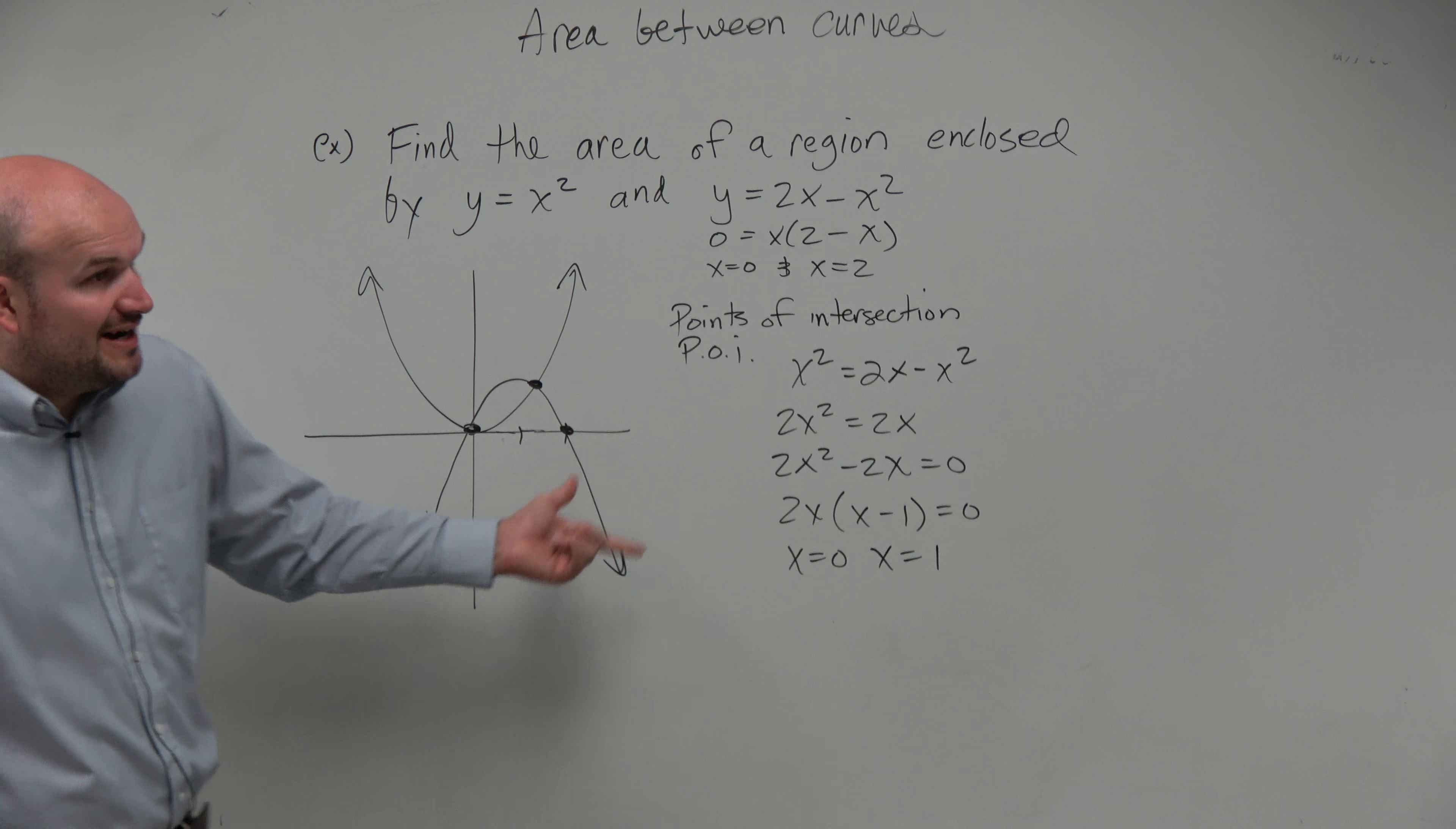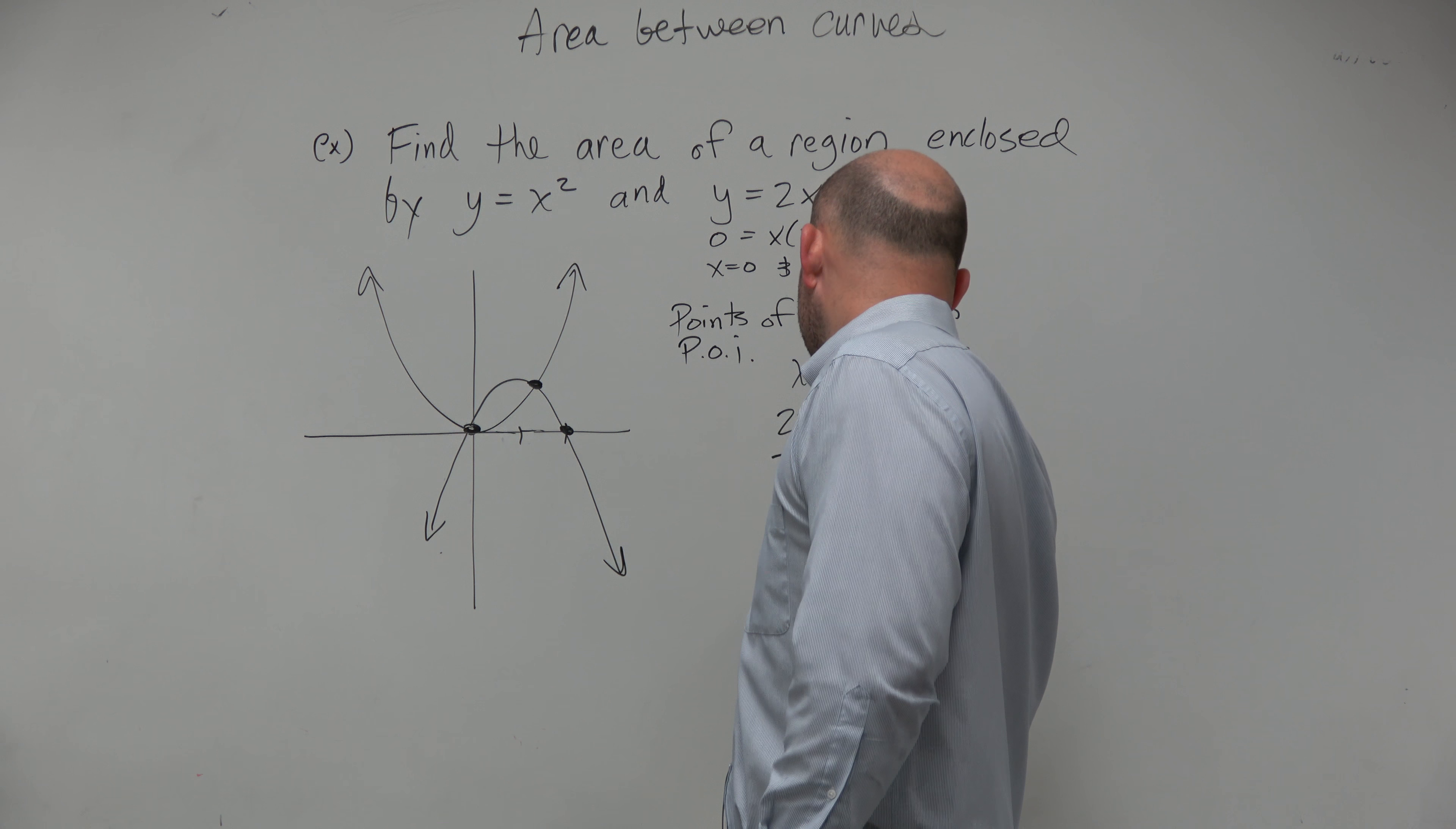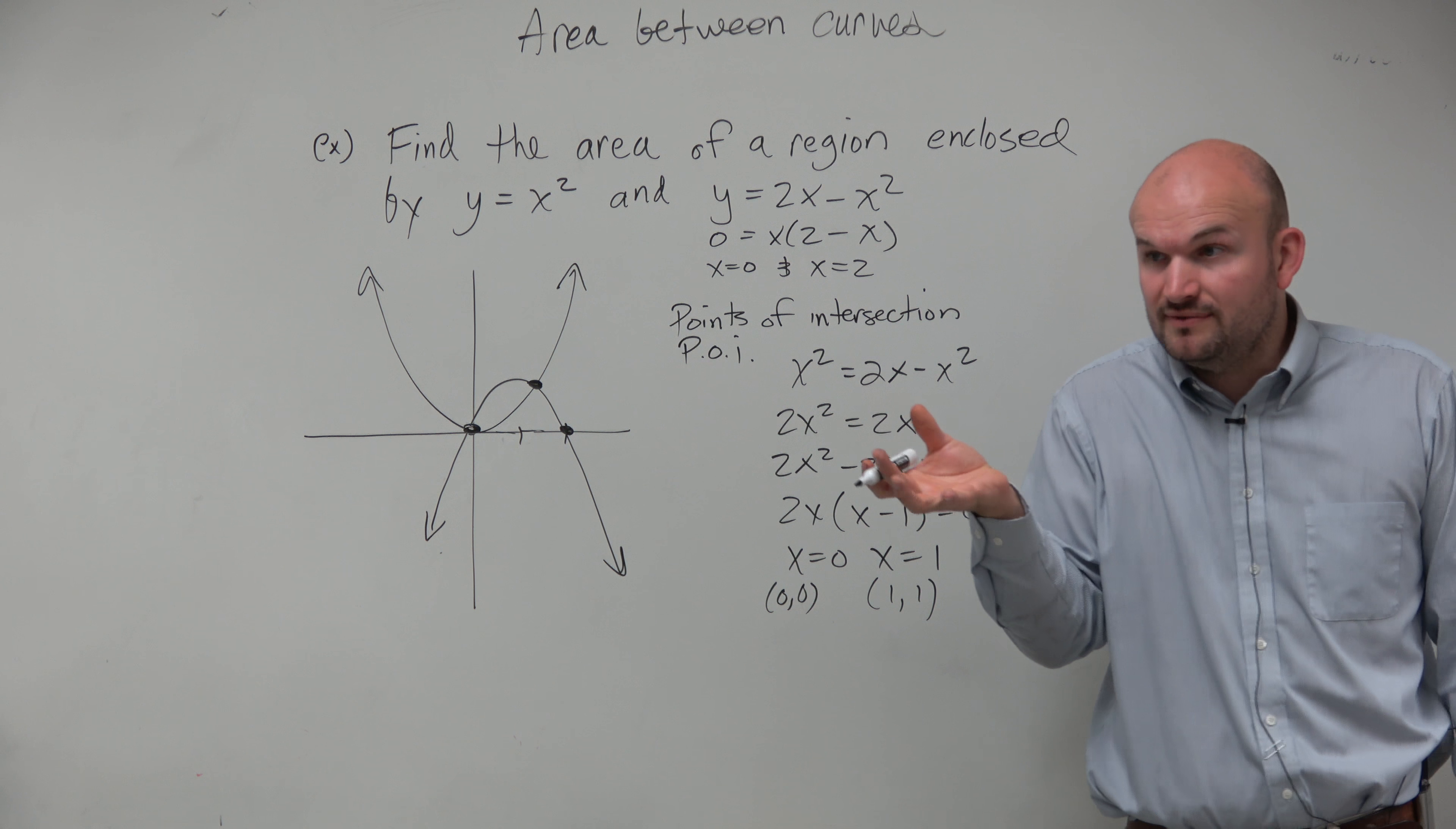So we could say the points of intersections occur at x equals 0 and x equals 1. Now, if we needed to find points, we would need to find the y values as well, right? So to find the y values, we could either just plug in both these points. And since they're equal to both equations, it doesn't matter which equation we plug them into. But I'd say plugging them into x squared would be the easiest. So if you needed to find the points, you could say it's from 0, 0 and it's going to be from 1, 1.